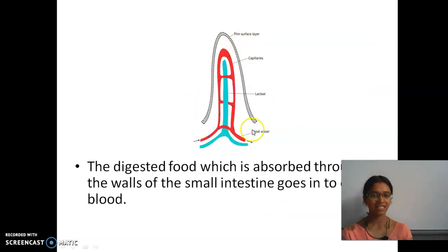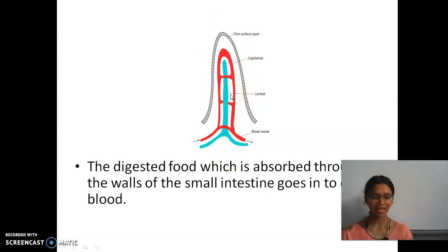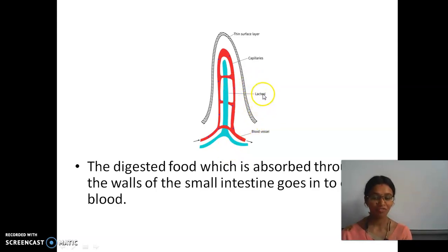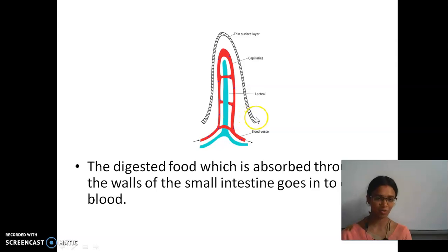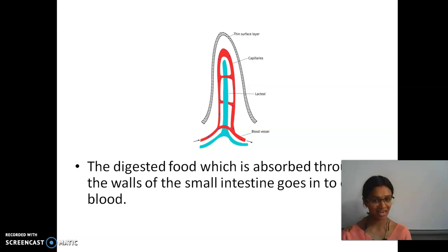This is the structure of villi. It has blood vessels and lacteal capillaries, and it is surrounded by a thin surface layer. The lacteals help in the absorption of fatty acids and glycerol. The blood vessels help in the absorption of glucose and amino acids. Carbohydrate is converted into glucose, protein into amino acid, and fat is converted into fatty acids and glycerol.